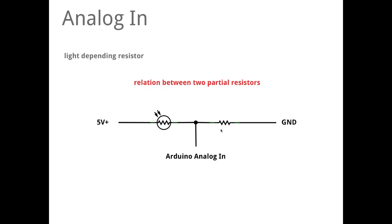Again, it's connected the one side to the five volt plus, the other side of this series circuit to the ground, and the connection between the two in the middle comes to the analog in, and so Arduino can measure.